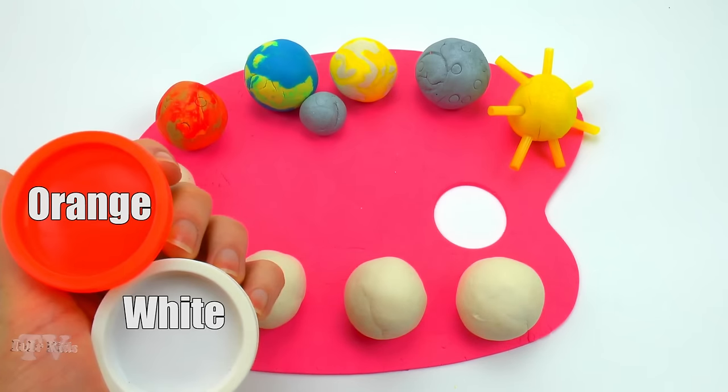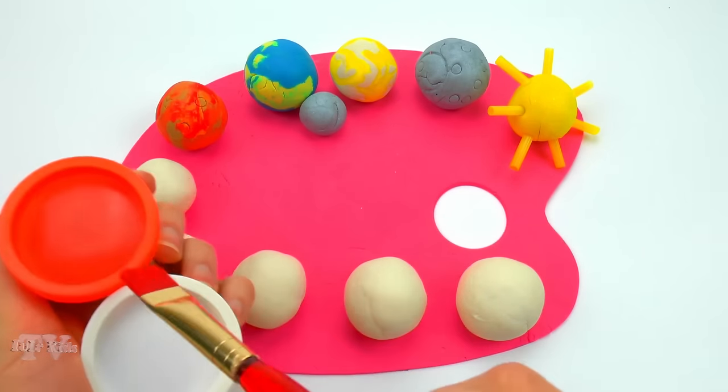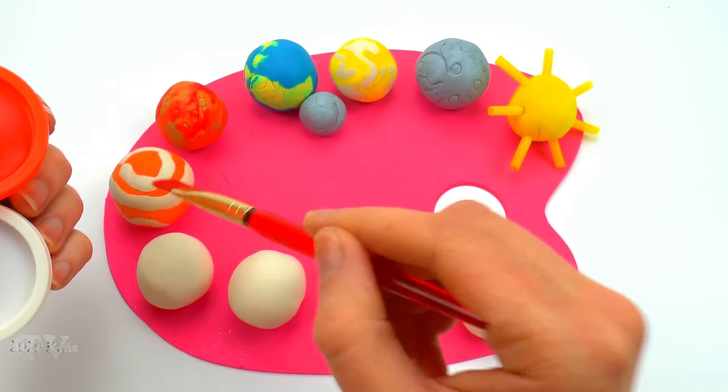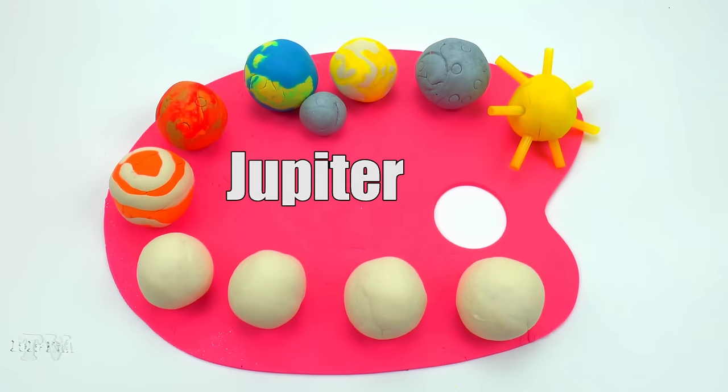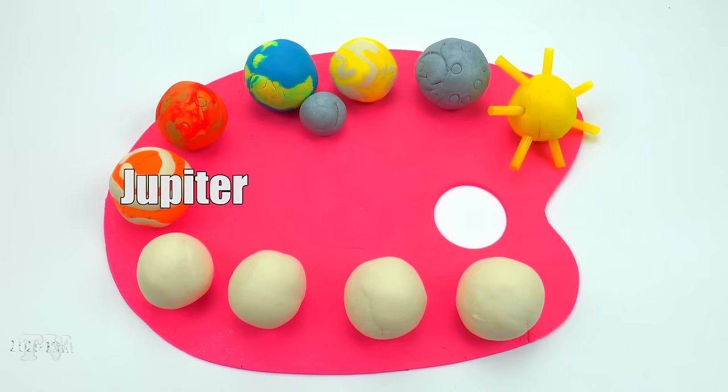Orange white. Jupiter. Jupiter is the fifth planet from the sun, the largest in the solar system.